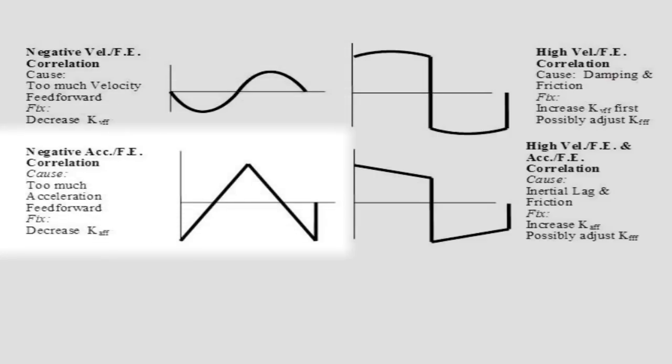The bottom left corner shows a response that is the opposite from the diagram in the bottom left corner of the previous slide. This shape is due to having too much kAFF, so to correct it, just decrease kAFF until the triangular tips on the left and right come up to zero, the tip in the middle comes down to zero, and the following error oscillates about zero.